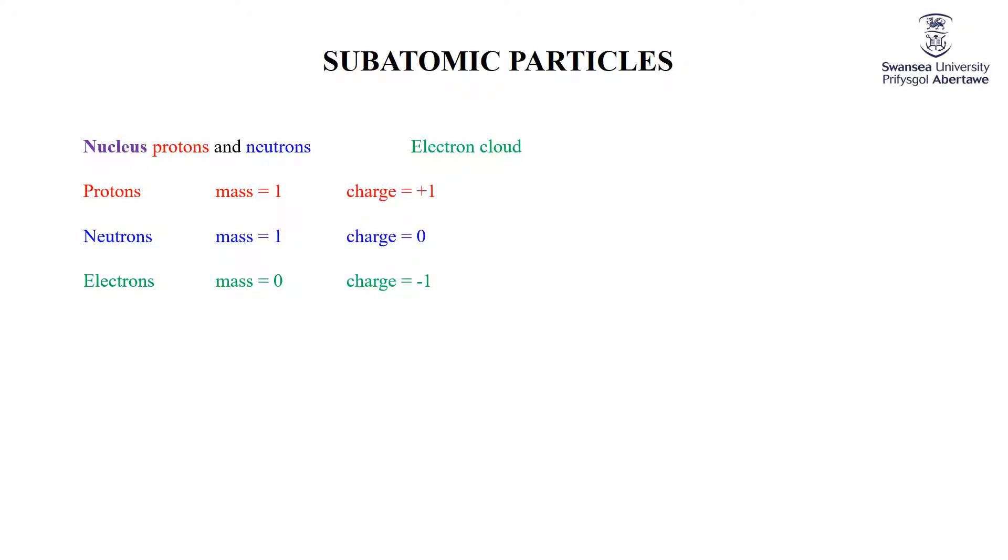Also, things that you absolutely have to know are the charges of these particles. Protons charge of plus 1. Neutrons neutral. Electrons charge of minus 1. Again, the 1 is relative. What we show here is that protons have the same positive charge as electrons have a negative charge. So in order to balance out a proton, you need one electron.